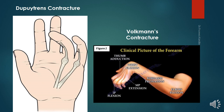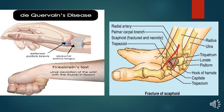The deformity of the hand in Volkmann's contracture presents as flexion at the wrist, extension at the metacarpophalangeal joint, and flexion at the interphalangeal joint.